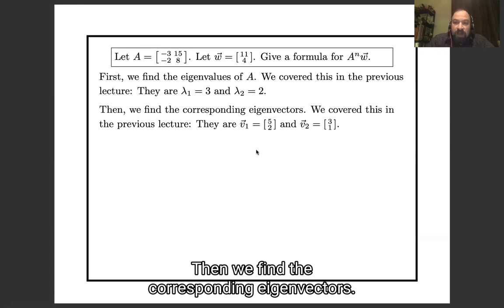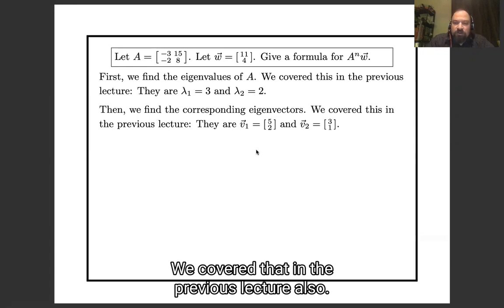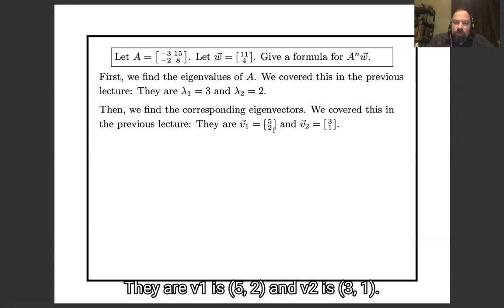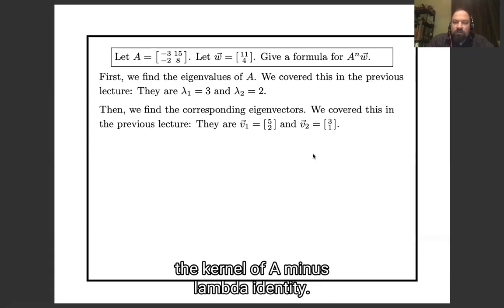Then we find the corresponding eigenvectors. We covered that in the previous lecture also. They are v₁ = [5, 2] and v₂ = [3, 1]. And we found that by computing the kernel of A minus λ identity.